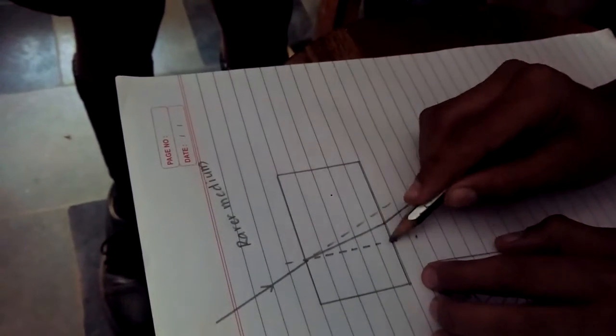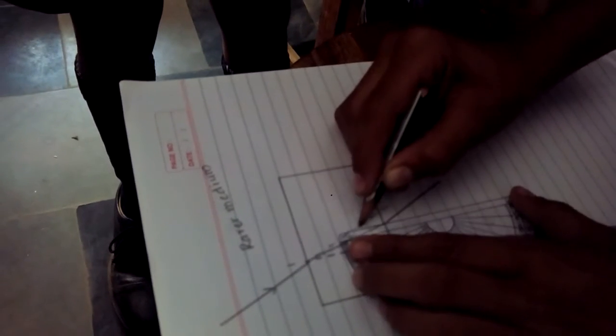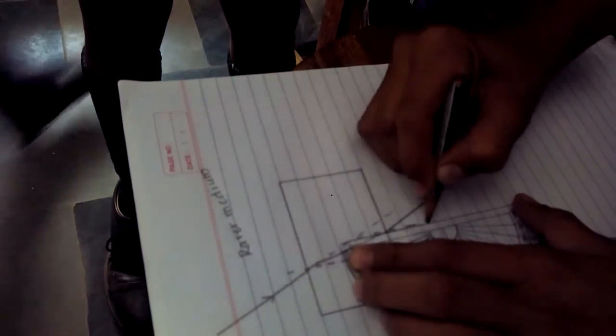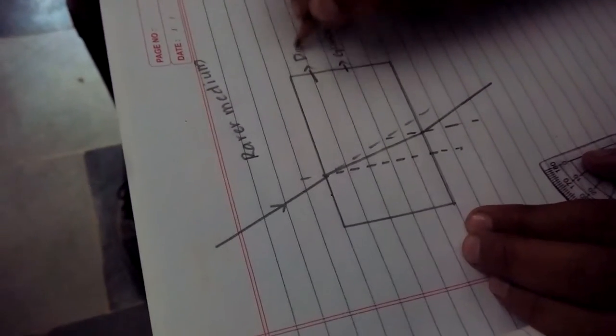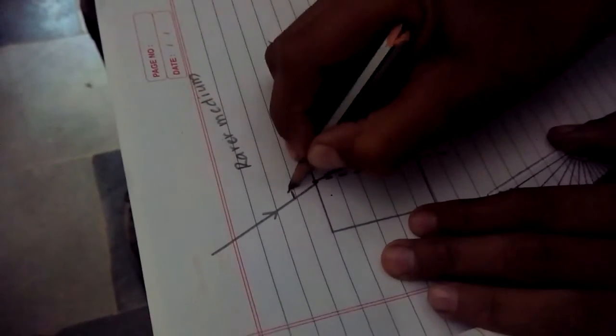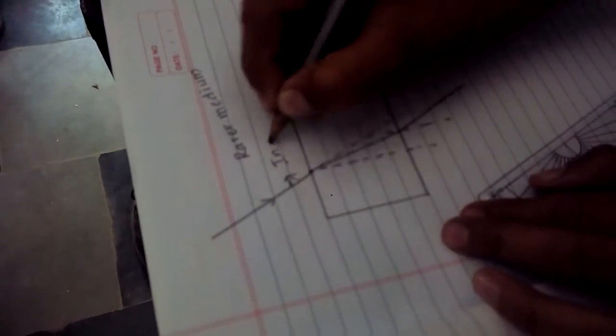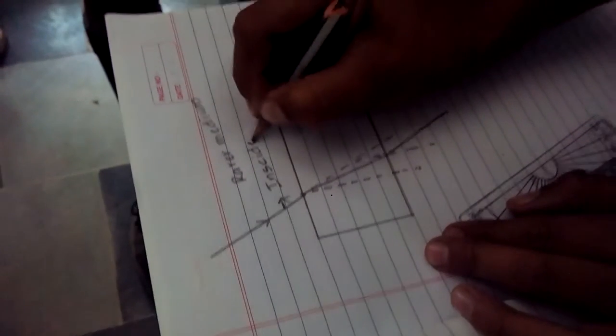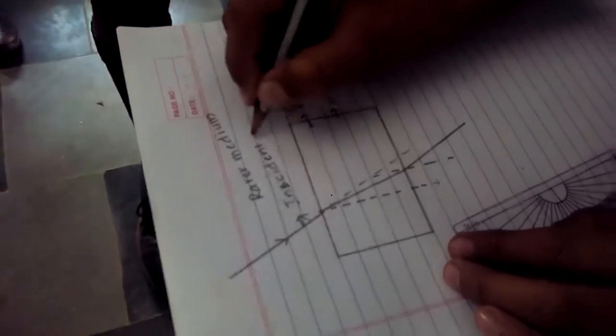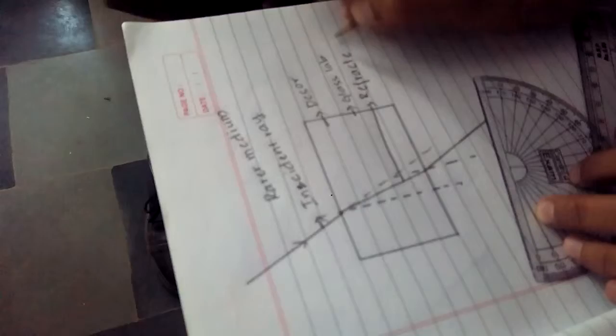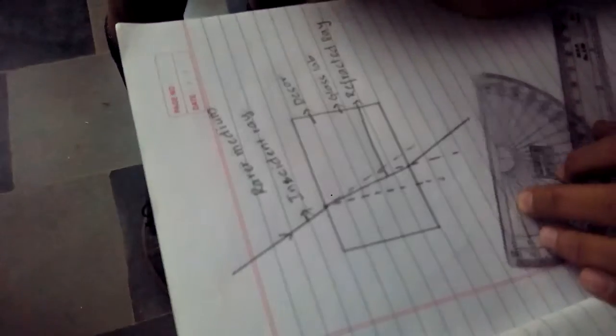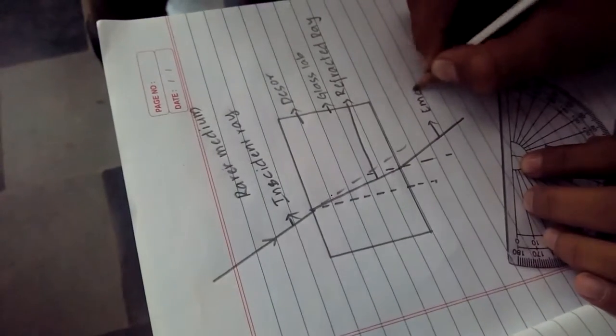As you can see, this ray is moving away from normal. This is the normal. It is a glass slab. It is denser medium. And this ray is called incident ray. Incident ray. It is called refracted ray. And it is called emergent ray.